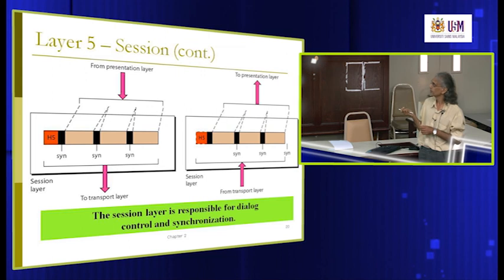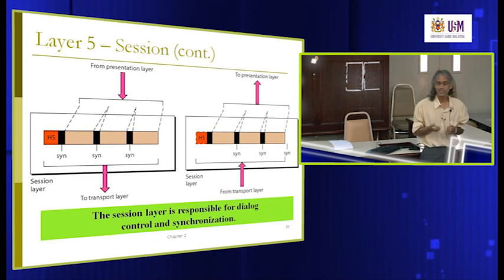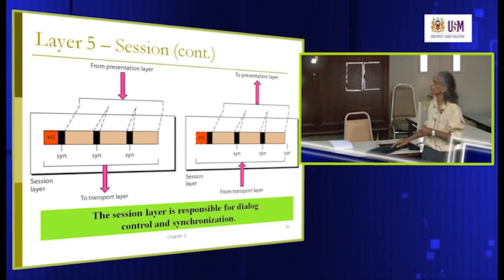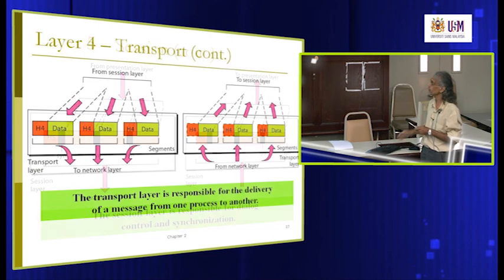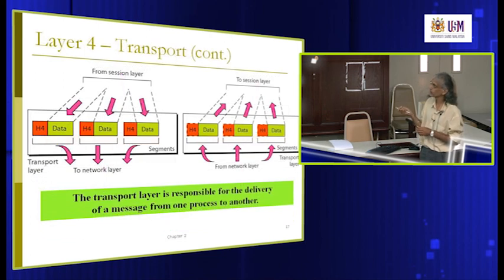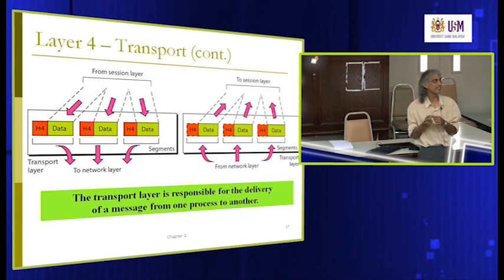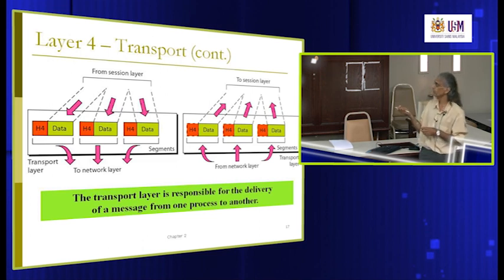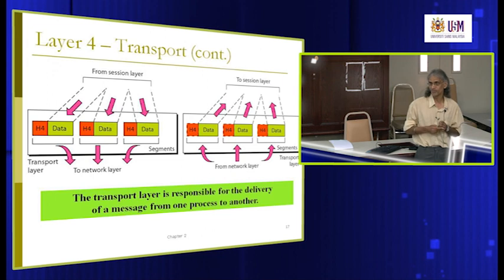The session layer receives data from the upper layer and puts synchronization checkpoints into the data at regular intervals. This data is then passed to the transport layer, which chops up the data into small blocks and puts a sequence number in the header. At layer 3, the IP number is added; at layer 2, the error control code is added; and at layer 1, bits are converted into signals.